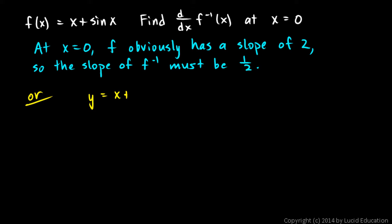Y is x plus sine x. So switch x and y, and you get x is y plus sine y. And then differentiate this implicitly.